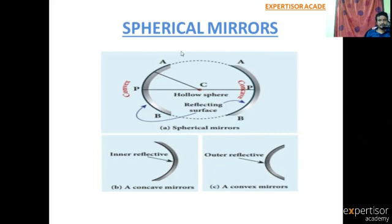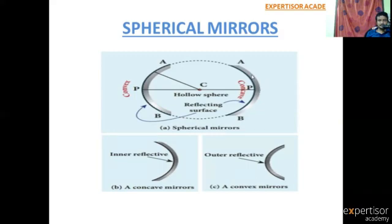Let's consider a hollow sphere. This is the hollow sphere, and this is the centre of the hollow sphere. For a Concave Mirror, the inside is the reflecting surface and the outside is the non-reflecting surface — that means the outside surface is silverly coated.